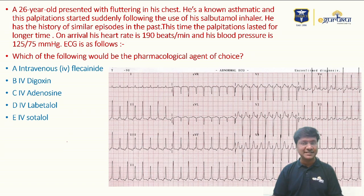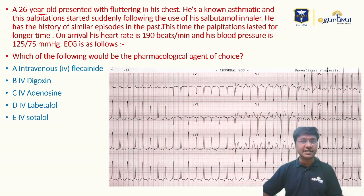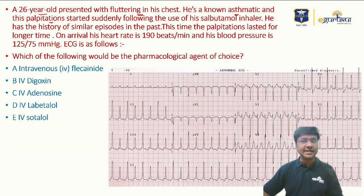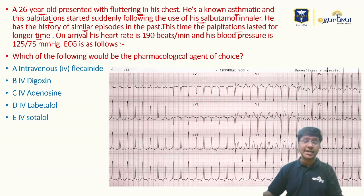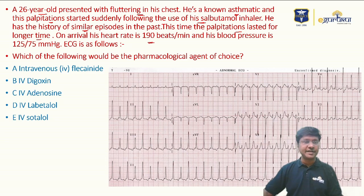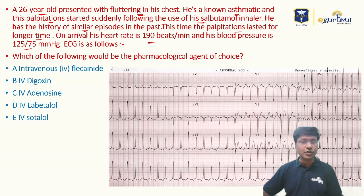Now let's discuss the clinical ECG of the day. We have a 26-year-old presenting with fluttering in his chest. He is a known asthmatic, and his palpitations started suddenly following the use of his salbutamol inhaler. He has a history of similar episodes in the past. This time the palpitations lasted for nearly 20 to 30 minutes. On arrival, his heart rate is 190 beats per minute and blood pressure is 125/75 mmHg.